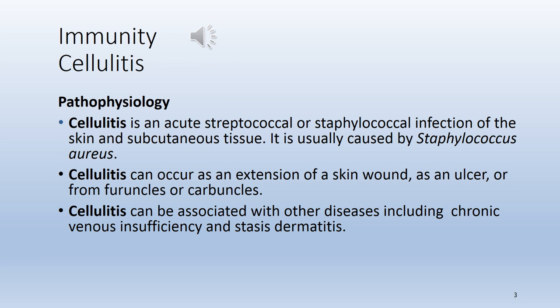Cellulitis pathophysiology: it is an acute streptococcal or staphylococcal infection of the skin and subcutaneous tissue, usually caused by Staphylococcus aureus. Cellulitis can occur at any age and can involve any skin area on the body. It can occur as an extension of a skin wound, as an ulcer, or from furuncles or carbuncles, and can be associated with chronic venous insufficiency or stasis dermatitis.